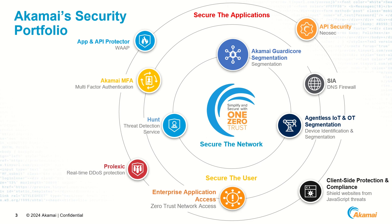Finally, we secure the applications using App and API Protector to protect websites, applications, and APIs against malicious traffic on Akamai CDN. API security discovers all APIs, then uses behavioral analytics to respond to threats and abuse anywhere across the enterprise, on or off Akamai CDN. Client-side protection and compliance helps protect against JavaScript and user data exfiltration and is designed for PCI DSS 4.0, and Prolexic protects against DDoS attacks.